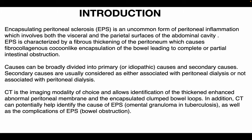Causes can be broadly divided into primary or idiopathic causes and secondary causes. Secondary causes are further divided into those associated with peritoneal dialysis or not associated with peritoneal dialysis. CT is the imaging modality of choice and allows identification of the thickened, enhanced, abnormal peritoneal membrane and the encapsulated clumped bowel loops. CT can also potentially help identify the cause as well as its complications.